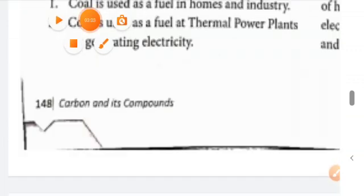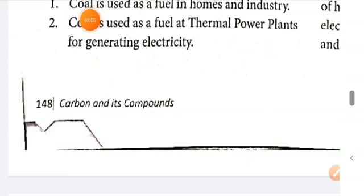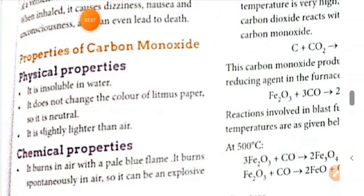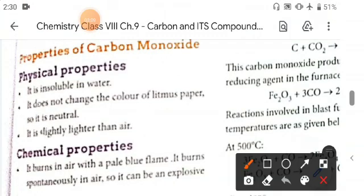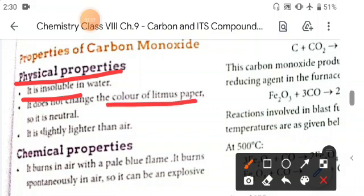The properties of carbon monoxide: first is physical property. It is insoluble in water and it does not change the color of litmus paper, so it is neutral. It is slightly lighter than air.